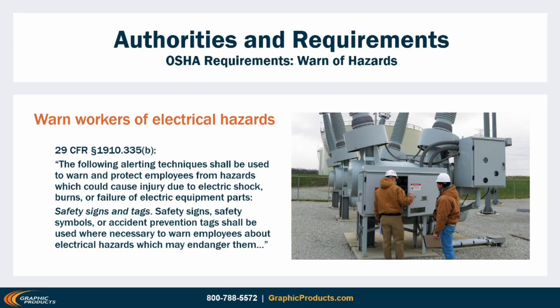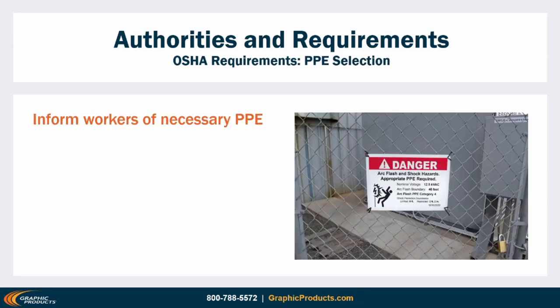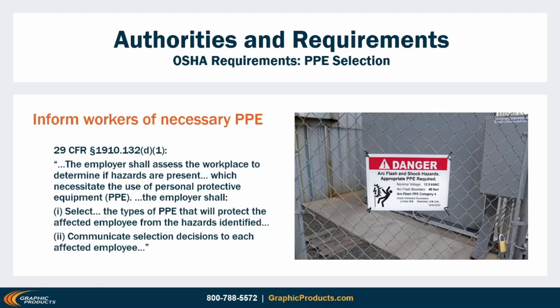OSHA gets more specific when it comes to hazards. The law mandates the use of safety signs to warn and protect employees from hazards which could cause injury due to electric shock, burns, or failure of electric equipment parts — this clearly includes arc flash hazards. Wherever a workplace hazard calls for PPE, employers must determine what PPE is needed, provide that equipment, and communicate the necessary information to employees. For the communication part of the rule, labels are a simple and effective solution.